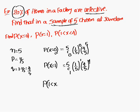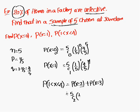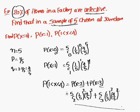Similarly, P(1 < X < 4) is nothing but P(X=2) plus P(X=3). For X=2: R is 2, so 5C2 into (1/5)^2 into (4/5)^3. For X=3: R is 3, so 5C3 into (1/5)^3 into (4/5)^2. Simplify to get the answer. So, this is the basic concept regarding the binomial distribution. Thank you.